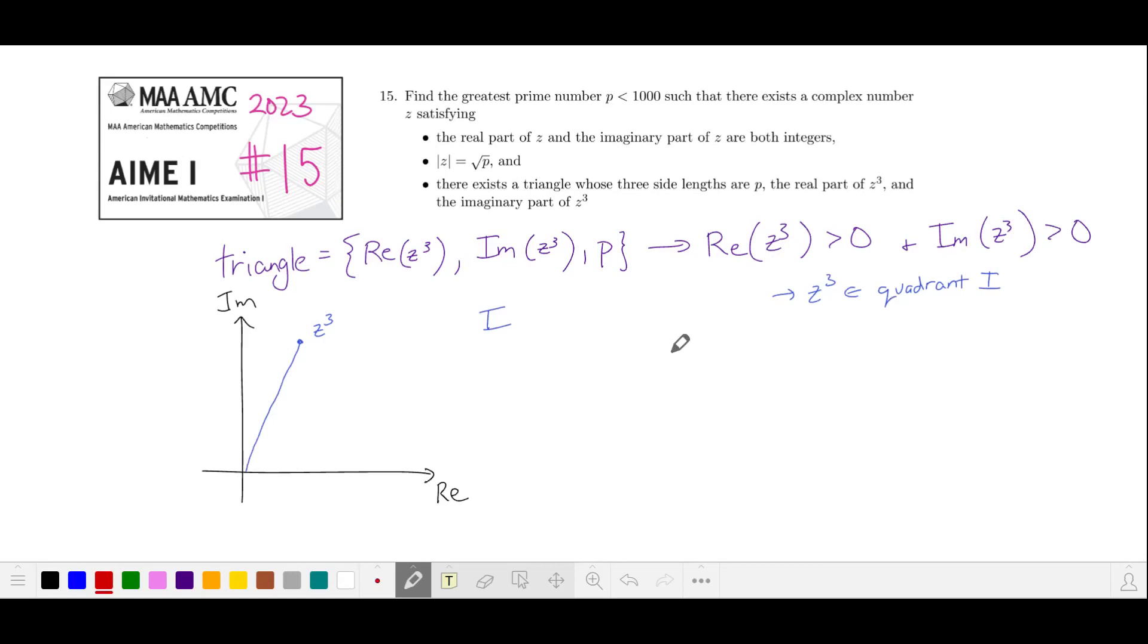Since the magnitude of z is the square root of p, in exponential form we can write z as the square root of p times e to the i theta, which gives us the cube of z is p root p, e to the i, 3 theta. This means one solution for z is also going to be in the first quadrant.